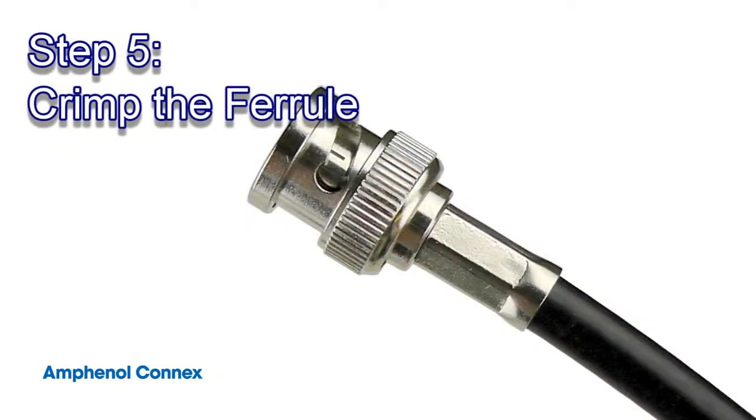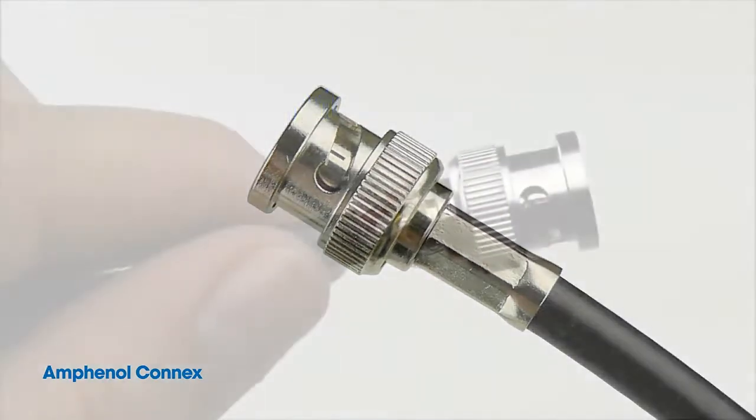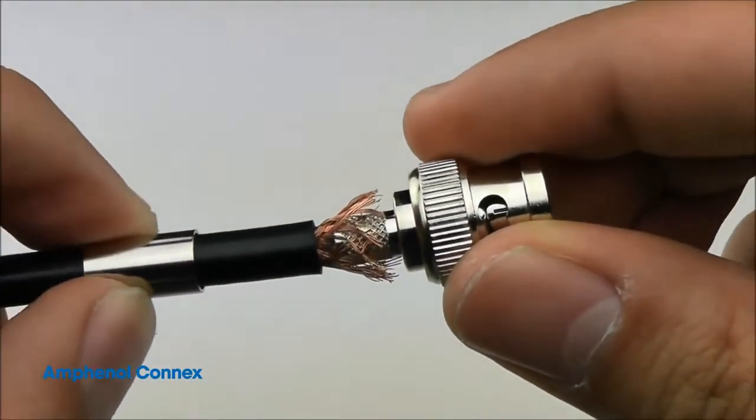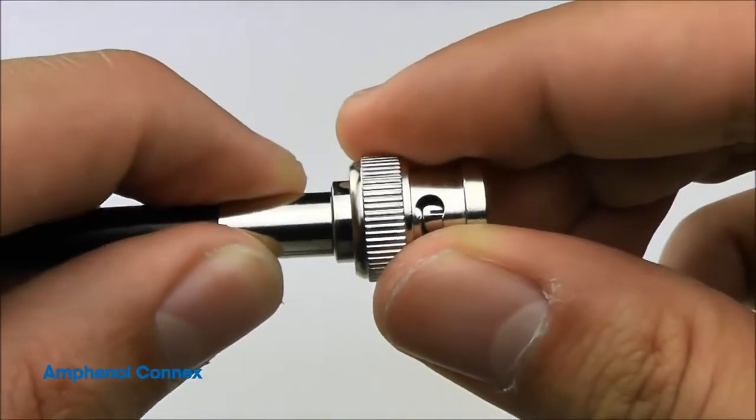Step 5. Crimp the ferrule. The first thing you need to do for this step is push the ferrule up so that it meets with the connector body.